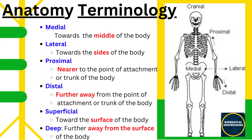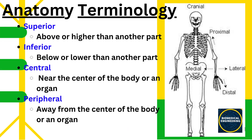Medial refers to the middle, while lateral refers to the side. Proximal refers to the point closest to the center of the body, while distal refers to the point furthest from the center. Superficial refers to the surface, while deep refers to the interior. Superior refers to the higher or upper part, while inferior refers to the lower part. Central refers to the middle or center, while peripheral refers to the outer parts.